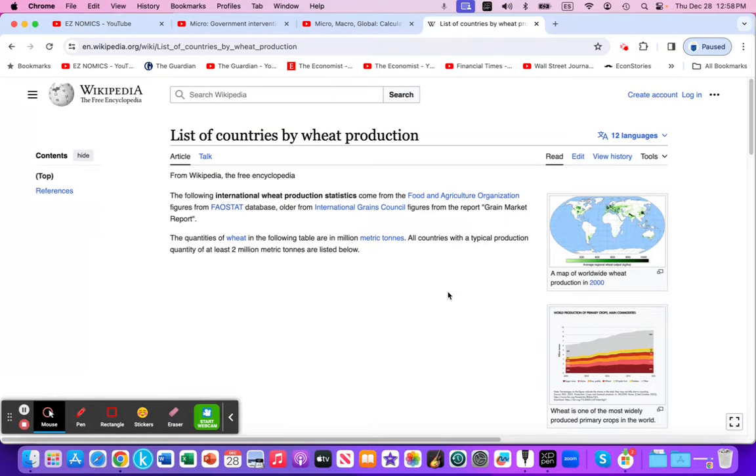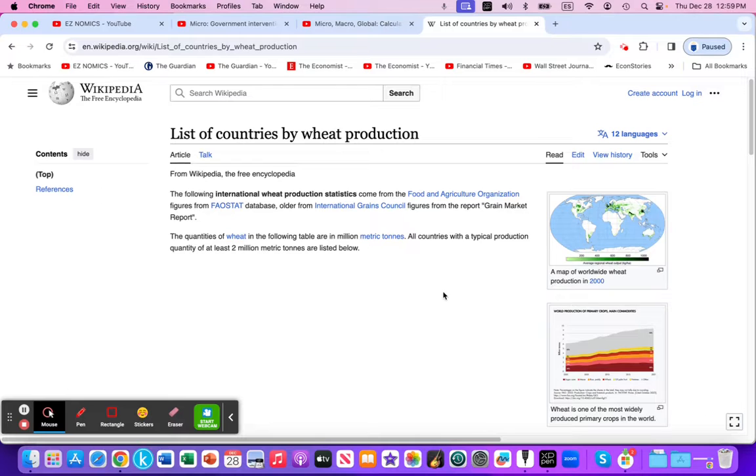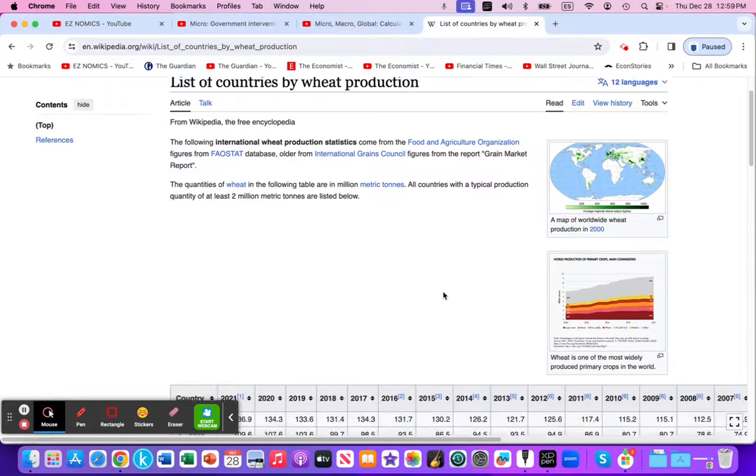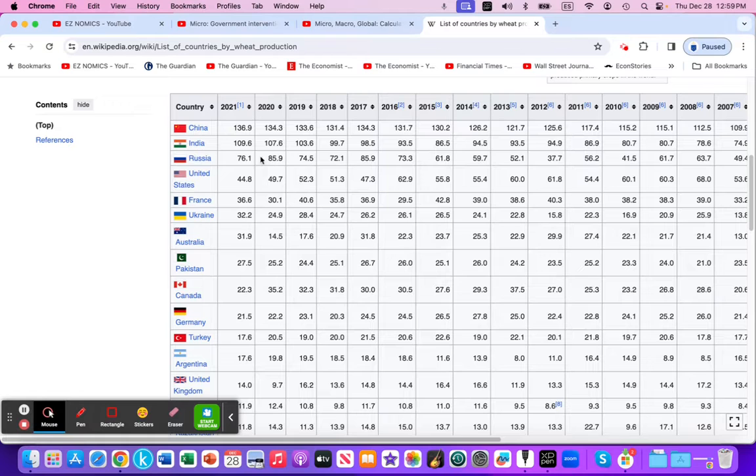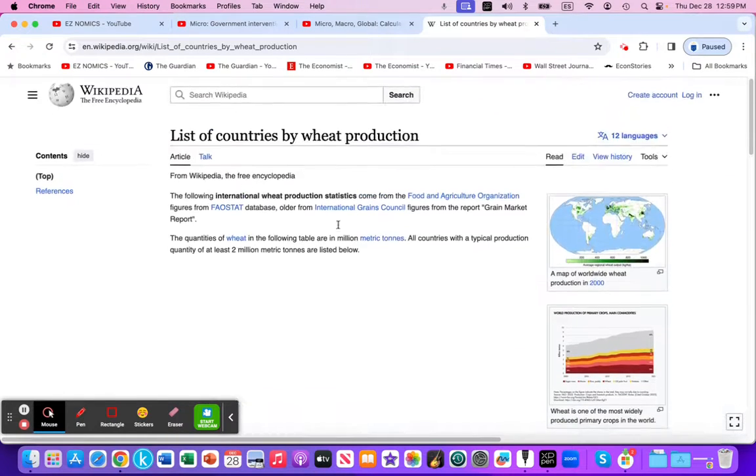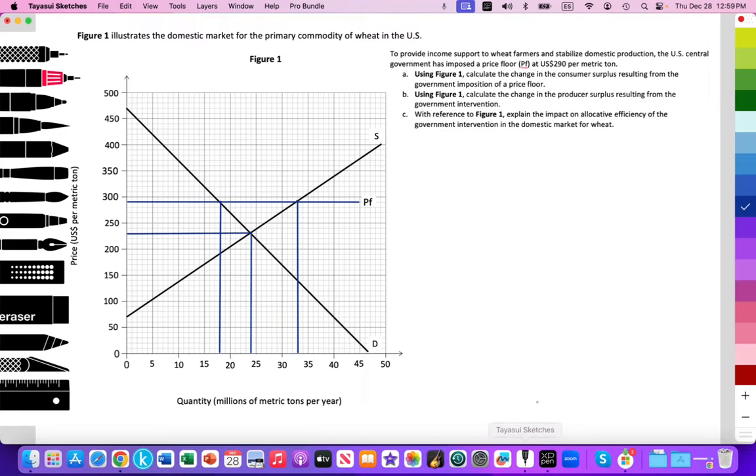So for our applied example, we're going to look at wheat production in the United States. Here on Wikipedia, we can see a list of countries and the quantity of wheat that's being produced in millions of metric tons, China being the number one producer in 2021, then India, Russia, the United States at 44.8 million metric tons in that year. So let's go ahead and start tackling these questions.